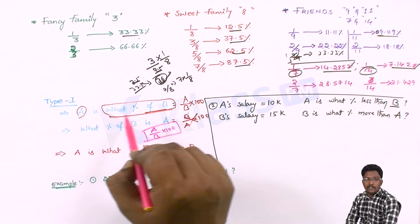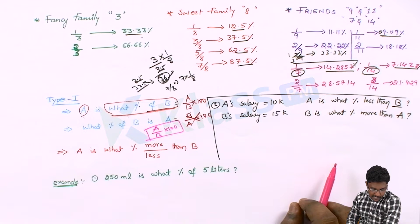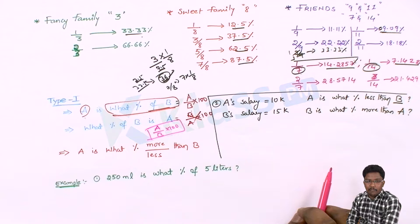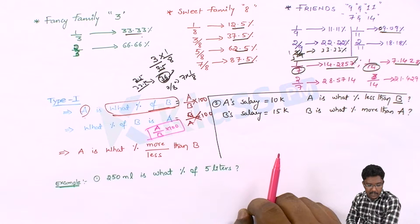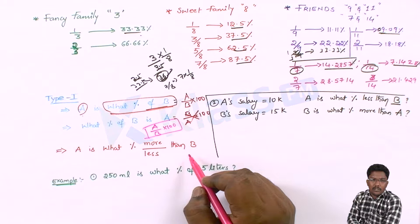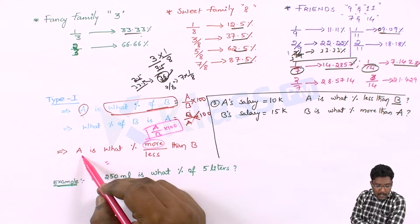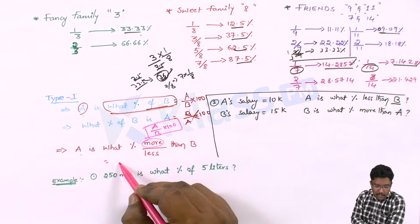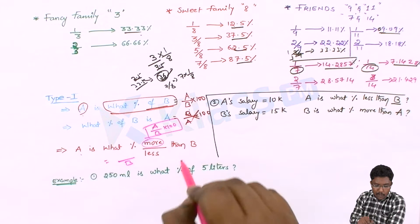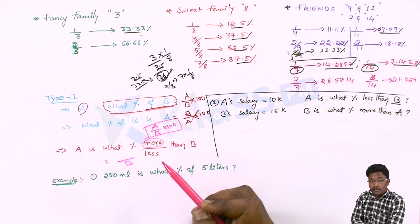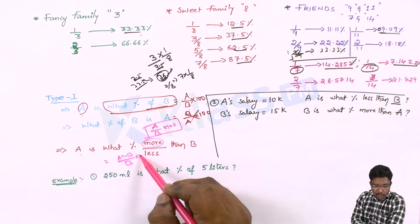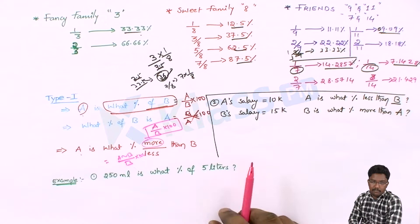'A is what percentage more than or less than B?' When A is what percent more than B, we are comparing the difference between A and B with B. So the formula is: (A − B)/B × 100 for 'more than,' and the same difference/B × 100 for 'less than.' The term B comes in the denominator because we are comparing with B.